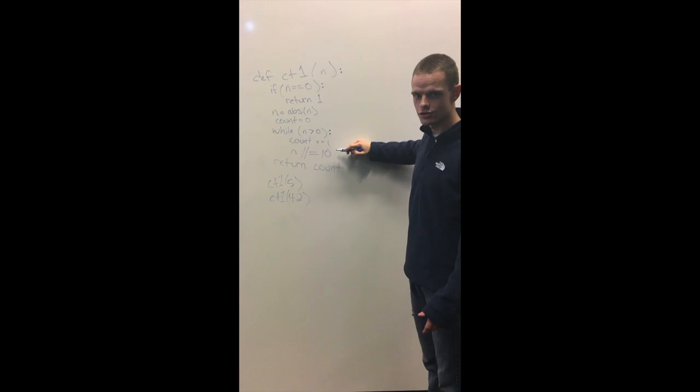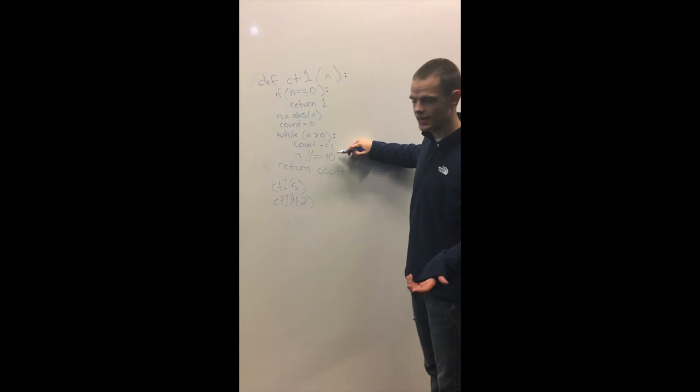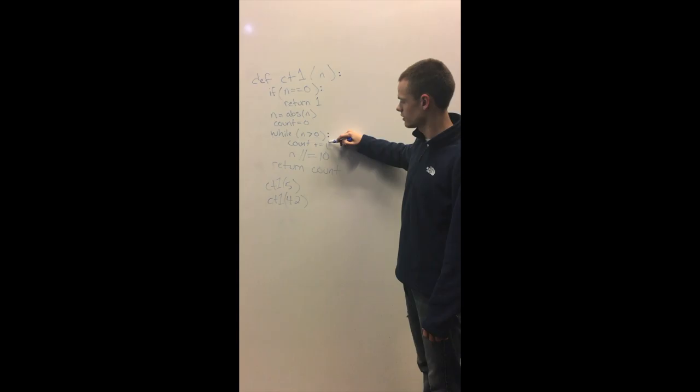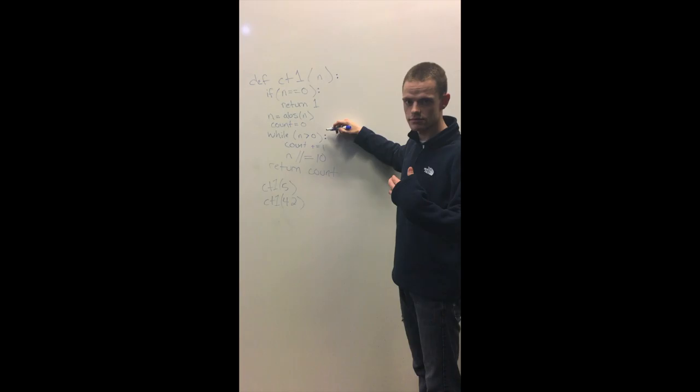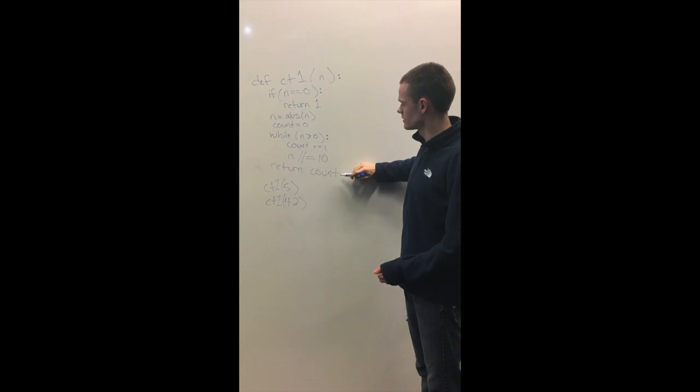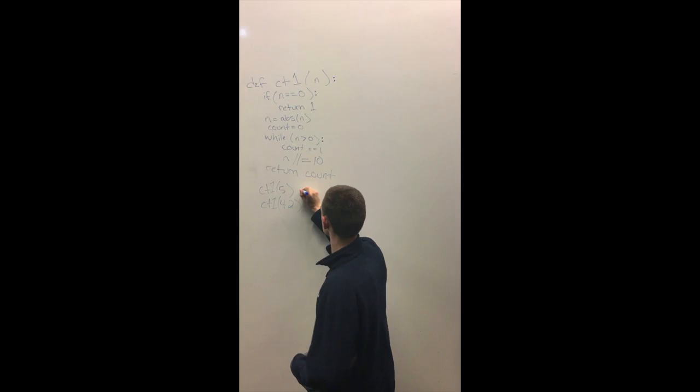So when we integer divide five by ten, that's going to return zero, and our count's going to be added to one. And so then when we run through this whole thing again, the while loop is going to be out because n is now not greater than zero. And then we're just going to return our count, which is one. So ct5 should just return one.